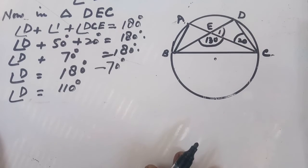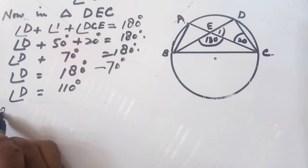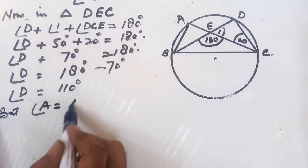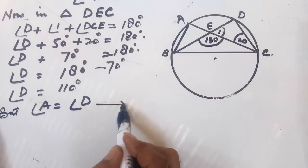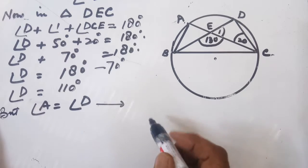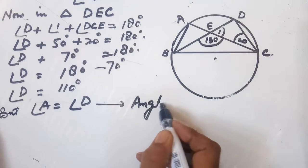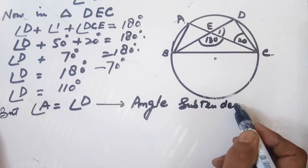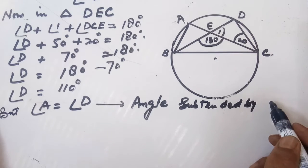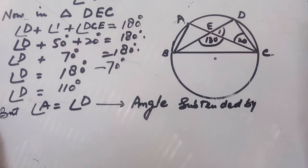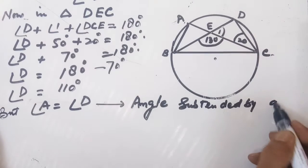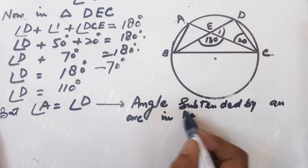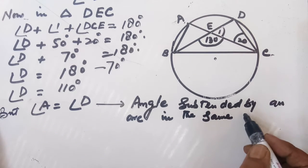Now, angle A is equal to angle D because angles subtended by an arc in the same segment are equal.